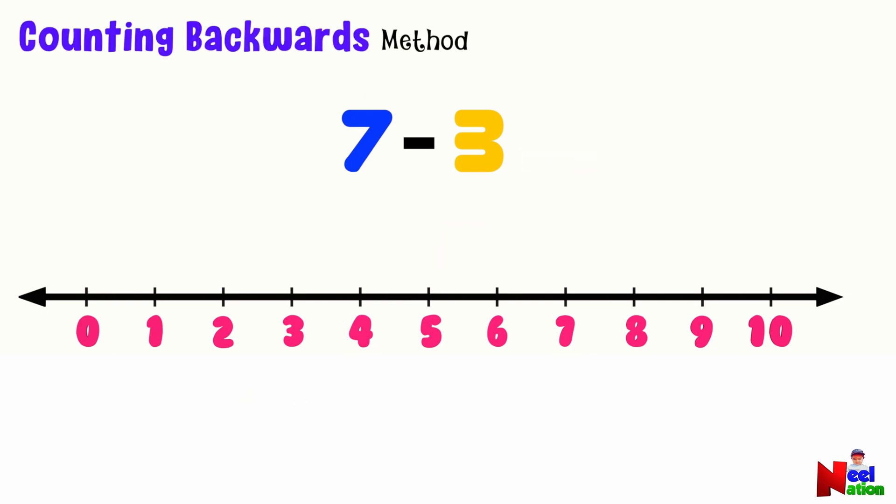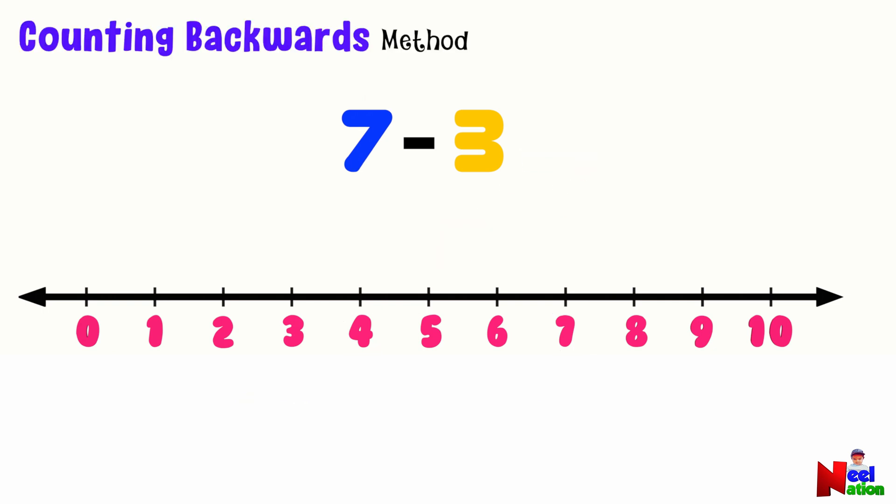Counting backwards. In the counting backward method, you keep the bigger number in mind and you count backward by the number you are taking away, starting just before the larger number. You keep 7 in your mind and since you are taking 3 away from 7, you count backwards 3 times starting before 7, which is 6, 5, 4.